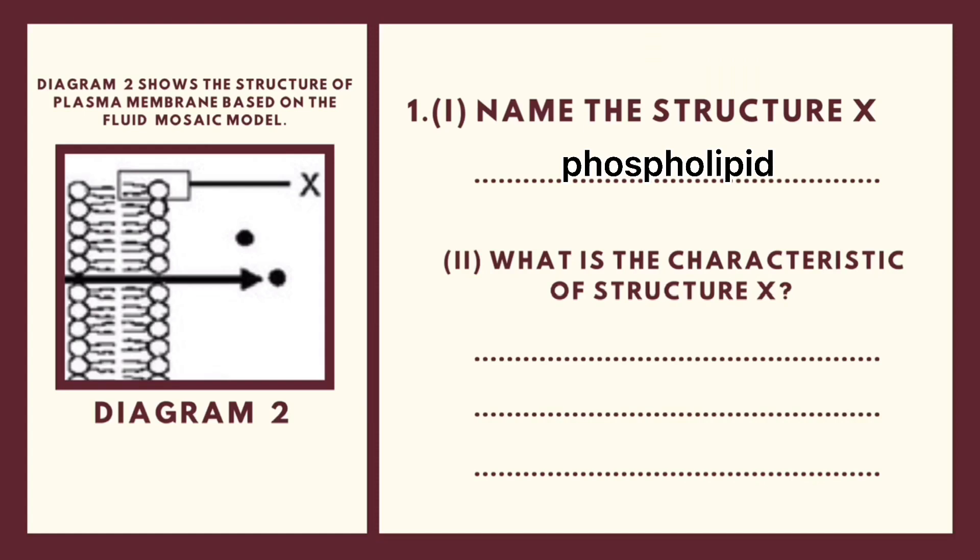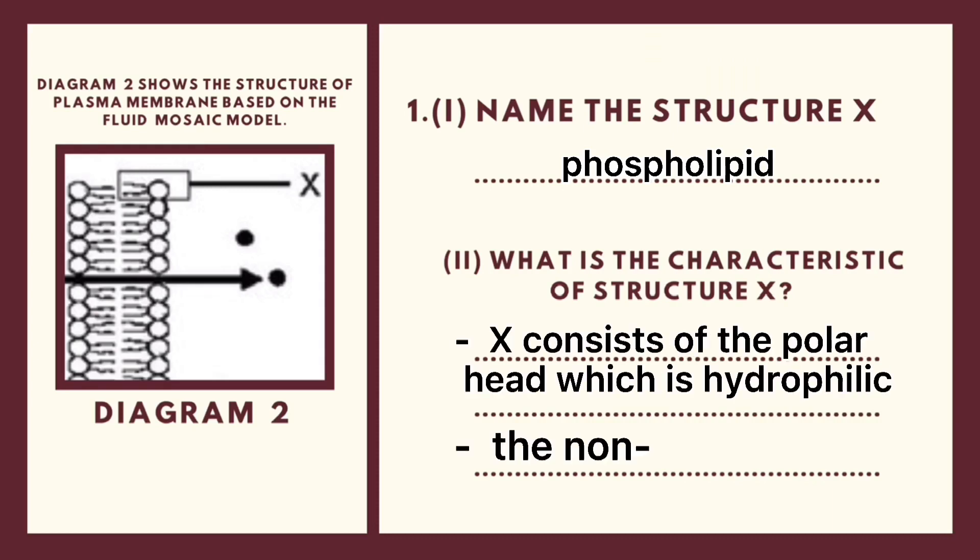Now, let's move to the second question. What is the characteristic of structure X? As we answer before, structure X is phospholipid. So, as we have learned in this chapter that phospholipid consists of two structure which is the head and the tail. So, in this question, we need to describe about the characteristic of structure X. So, the answer is, X consists of the polar head which is hydrophilic and the non-polar tail which is hydrophobic.